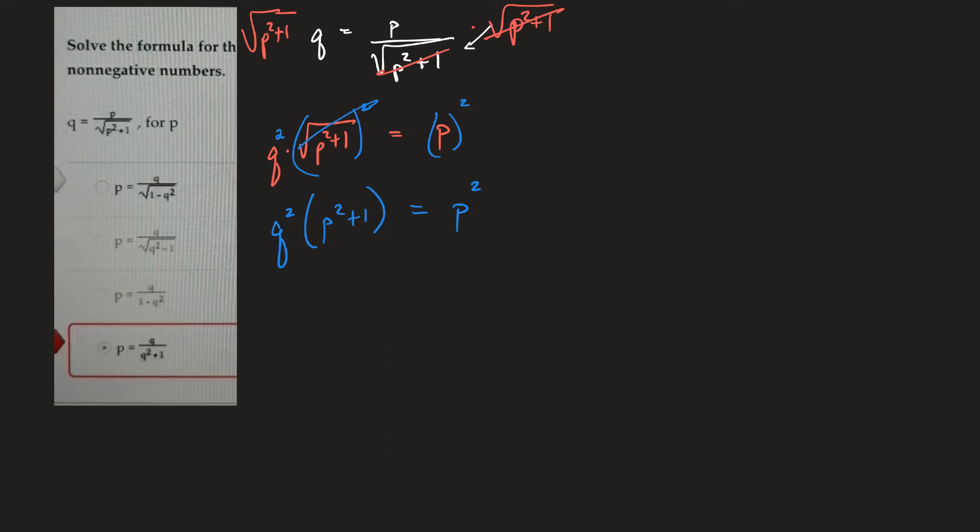Now, why don't I multiply the q squared through? So it would be q squared times p squared plus q squared is equal to p squared. Now let's move this to the other side. So it would be q squared is equal to p squared minus q squared p squared.